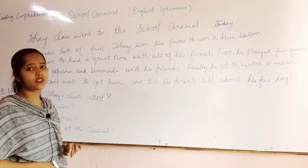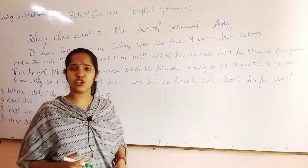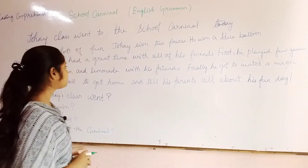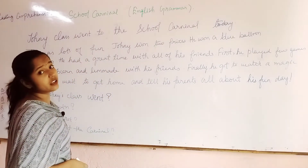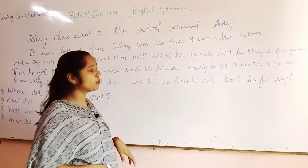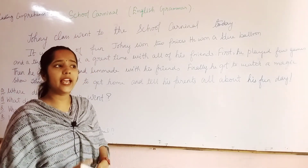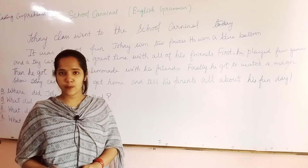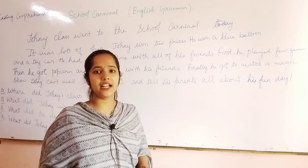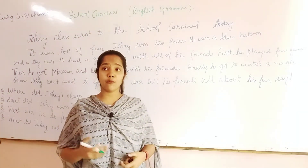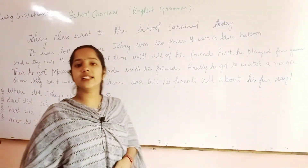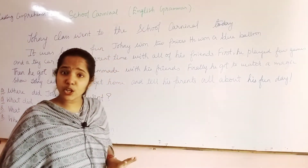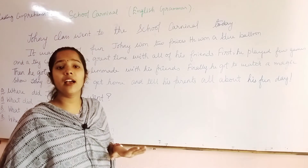Finally, he got to watch a magic show. A magician stands and does magic with a handkerchief, sometimes with a hat, sometimes with any instrument. Johnny finally got to watch a magic show. After that, Johnny can't wait to get home and tell his parents all about his fun day. When you go out with your cousins or friends anywhere, you are very excited to share your activities with your parents — that I went to this place and had so much fun, I ate those things. If you see some new things, you share with them. So when you go anywhere, you experience so many unusual and new things.